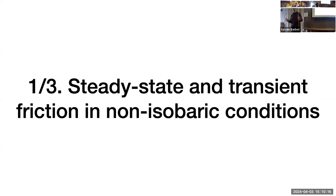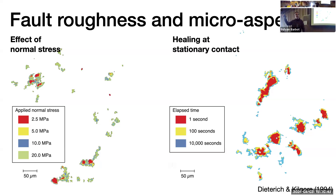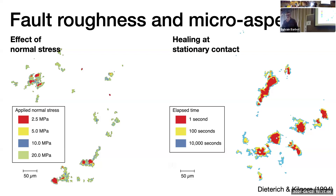We first study the simplest case: what is the frictional resistance of an object sliding on a surface? This is isothermal friction in non-isobaric conditions. Every natural surface is rough — it has local micro-scale topography. When I hold any object in my hand, only about 3% of my hand is actually in true contact with the bottle. This contact happens at micro-asperities that depend on the topography of the skin. The real area of contact occurs on tiny topographic highs — micro-asperities. To understand friction, you need to understand what happens on these actual contacts.